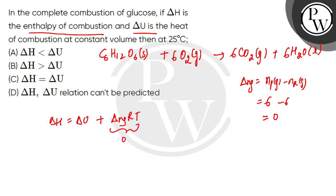what will be the term? This will be 0. So therefore, delta H is equal to delta U. So C option correct. Rest options are incorrect. I hope you understood. Thank you.